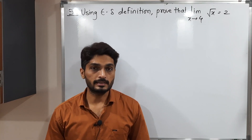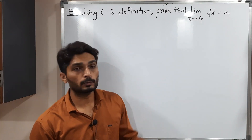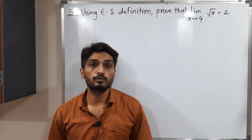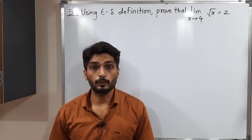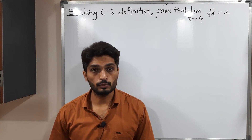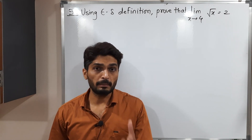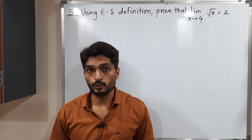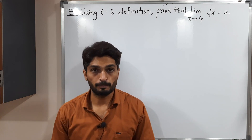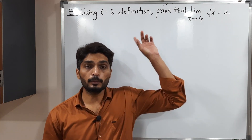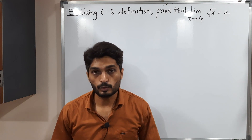Let us discuss this example. What we have to prove? We have to prove that the limit as x tends to 4 of root x is equal to 2. If you have seen my previous video, we have exactly the reverse problem here. But we have to prove it using the epsilon-delta definition.